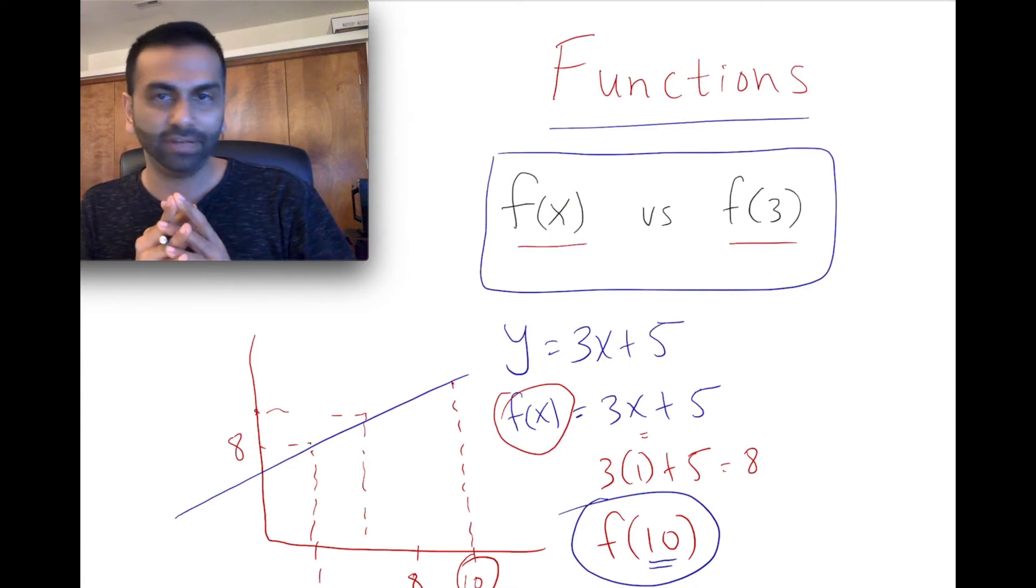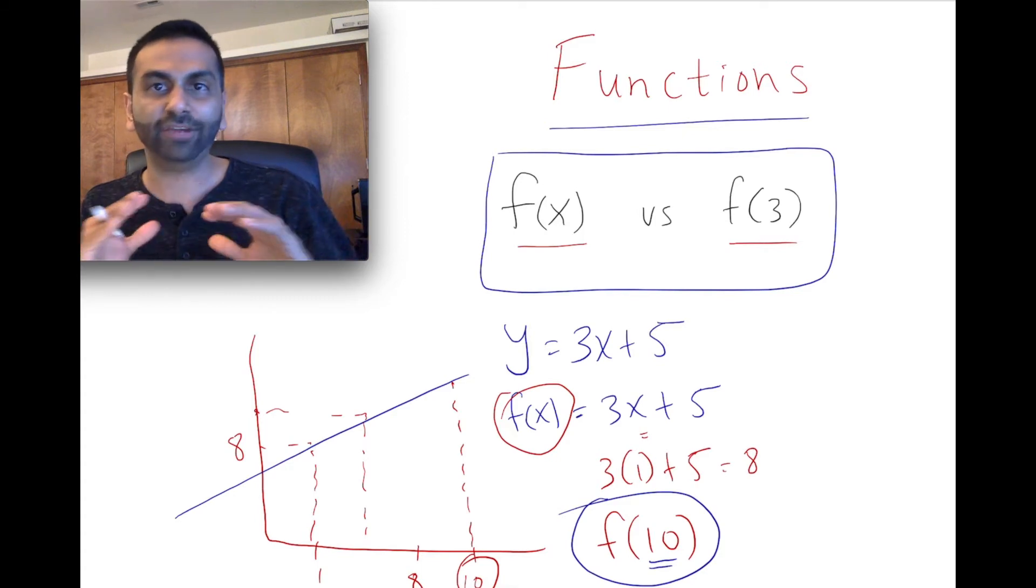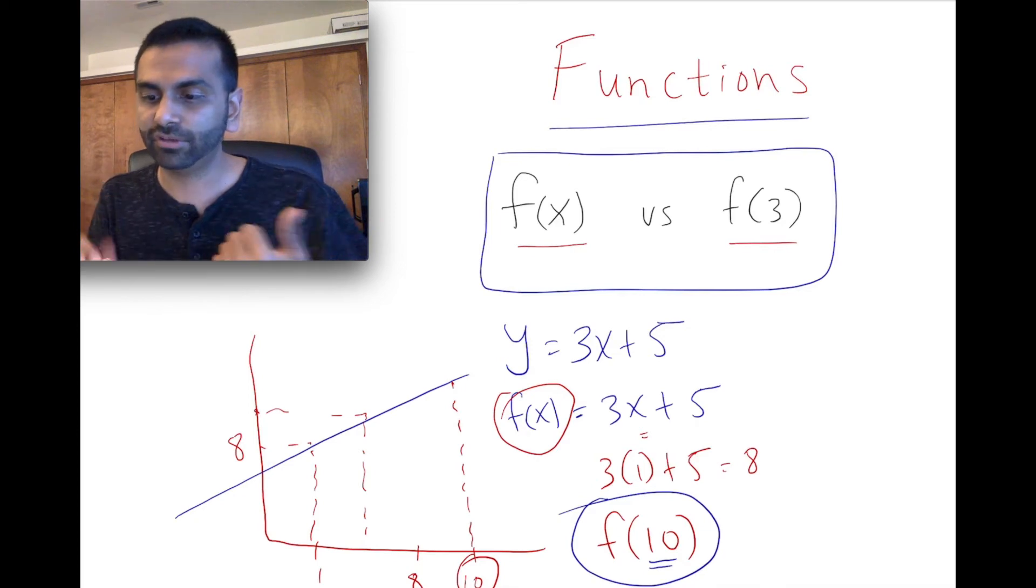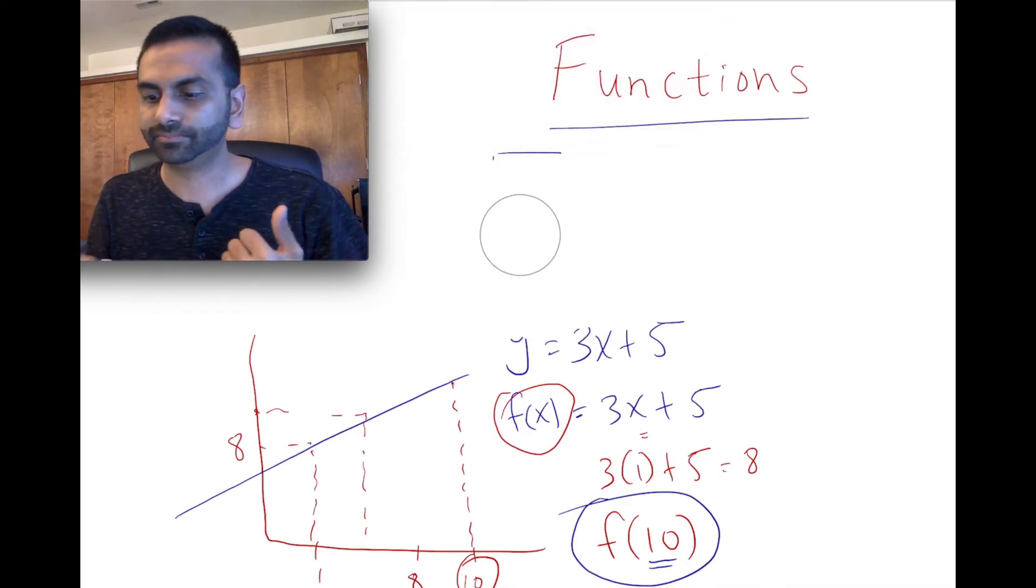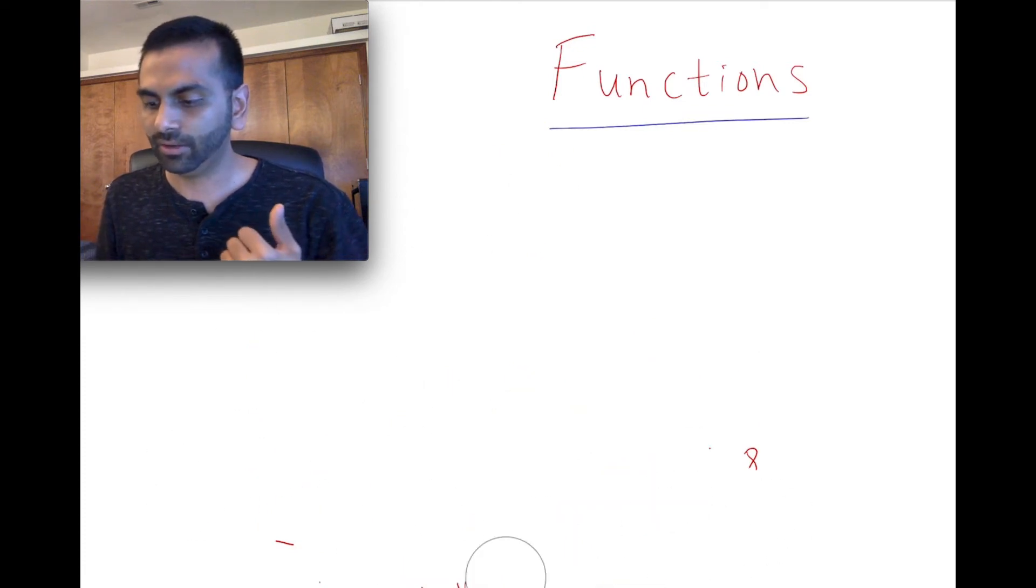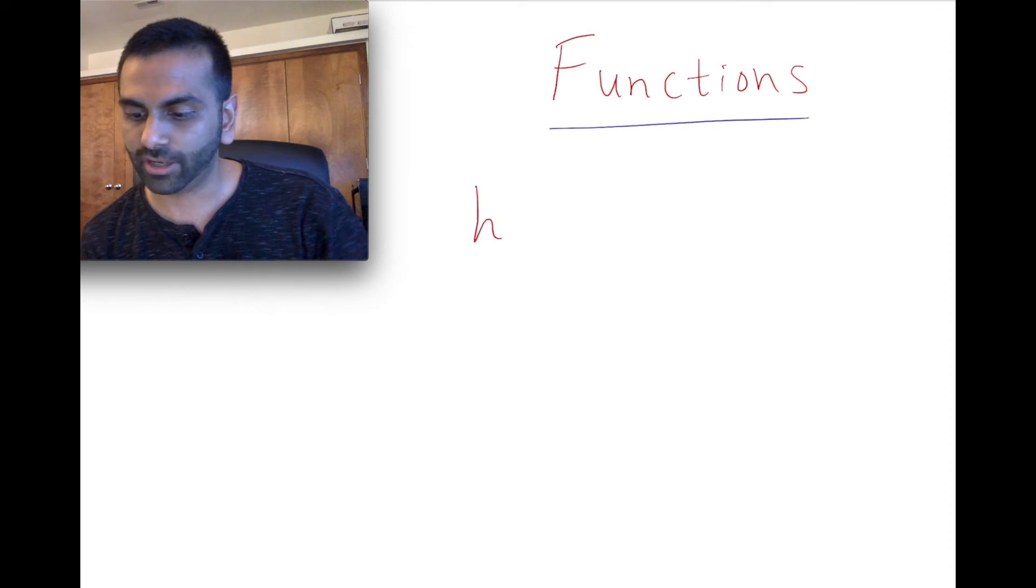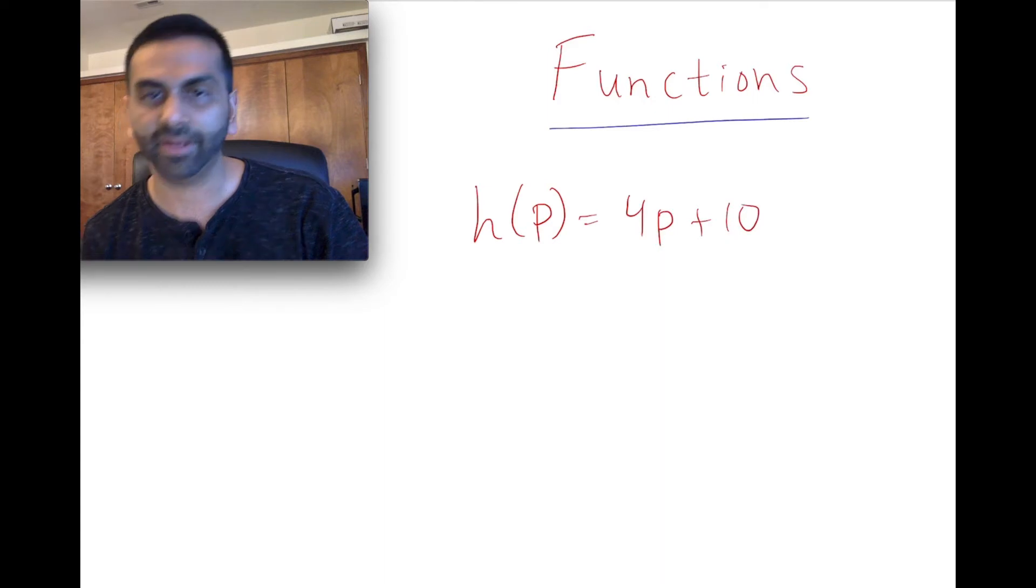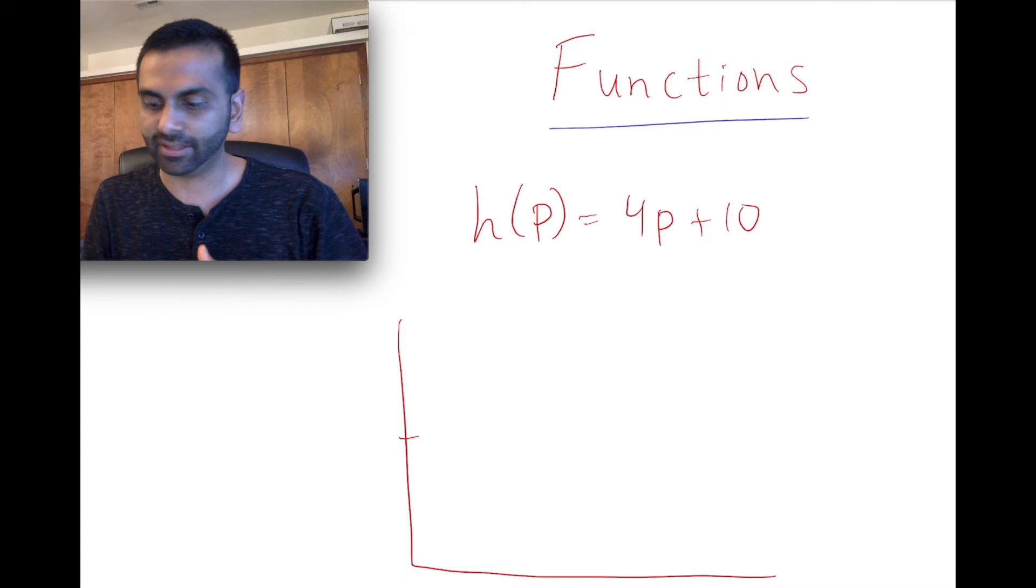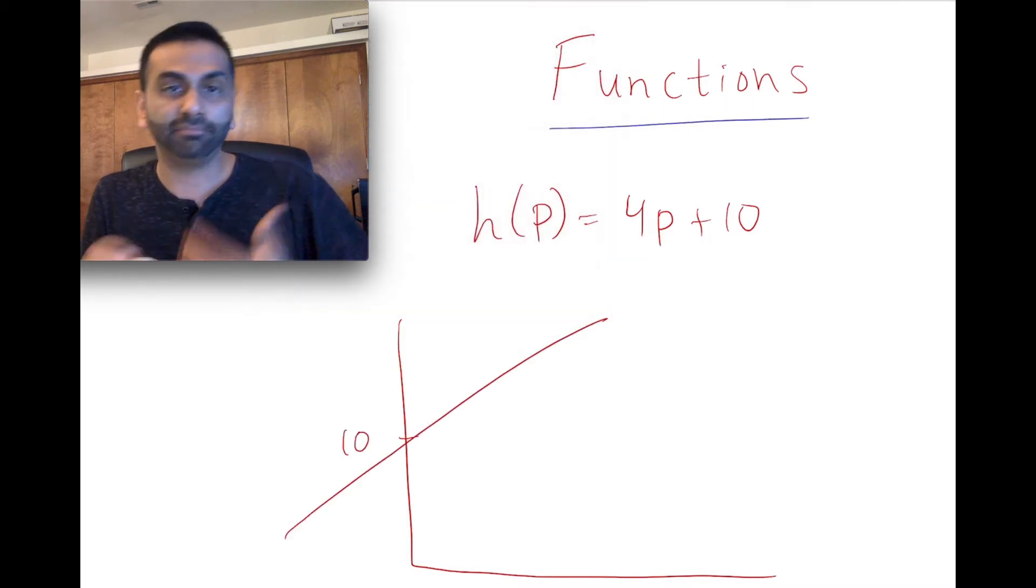Now, a couple of points on notation. There is nothing special about the letter y or x or even f. So with this whole process, if we were to instead, if I were to say, we have a totally new equation here. We have h of p equals 4p plus 10 or something. And the graph looks like this, where the intercept is 10, the slope is 4.